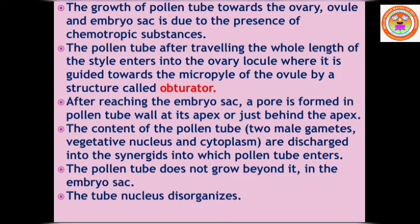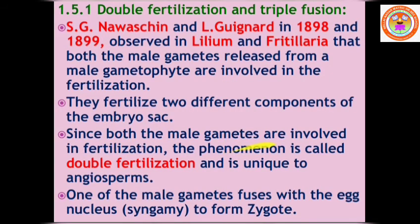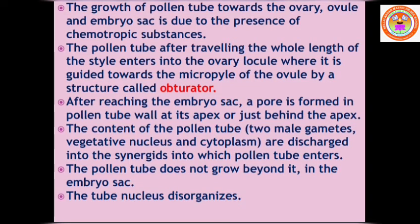Once the pollen tube enters and bursts open, its contents — two male gametes, cytoplasm, and vegetative nucleus — are released into the synergids. The pollen tube does not grow further beyond this point inside the embryo sac. The tube nucleus inside the pollen tube disintegrates, and with that, the entry of the pollen tube into the embryo sac is complete.